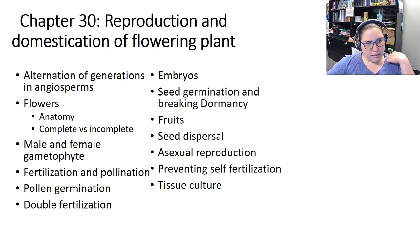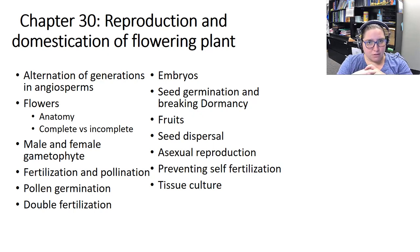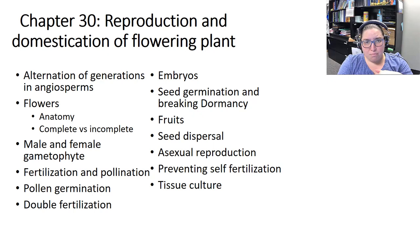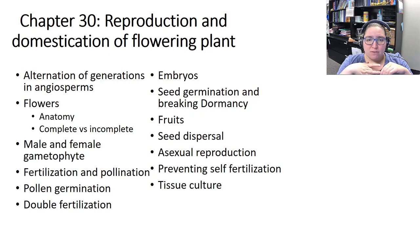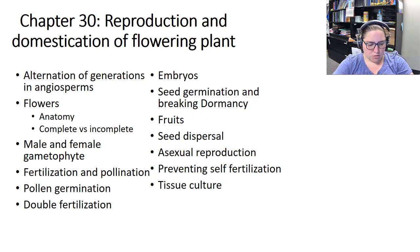That was chapter 30 — all about reproduction and domestication of the flower and plant. We covered the alternation of generations life cycle, flower anatomy and labeling parts, complete vs incomplete and perfect vs imperfect flowers, the male and female gametophyte generation in angiosperms, the difference between fertilization and pollination, double fertilization, seed structure, fruit, and the different kinds of asexual reproduction including tissue culture.